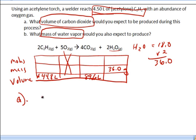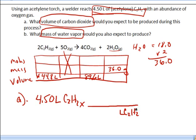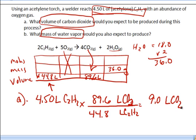The first question says what volume of CO2 would you expect? So we're going to start with what we know. We know we have 4.50 liters of C2H2. I immediately put liters of C2H2 on the bottom. I put liters of CO2 on top. And then I fill in the numbers from my table. So CO2 is going to be 89.6 liters. And then the C2H2 is going to be 44.8. Multiply that out and you end up with about 9.0 liters of CO2. So that's how much carbon dioxide we expect to make.